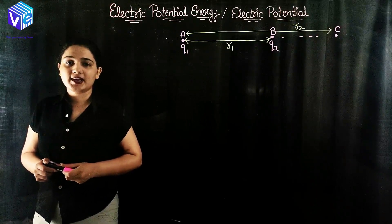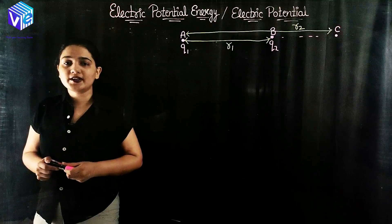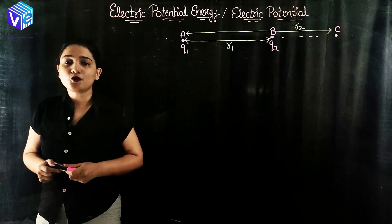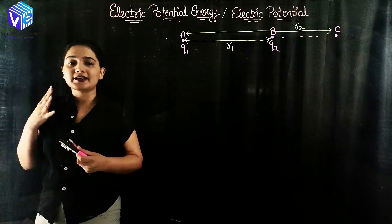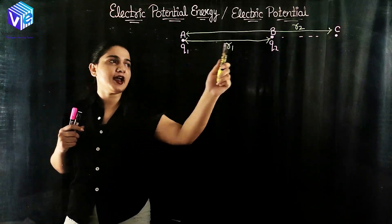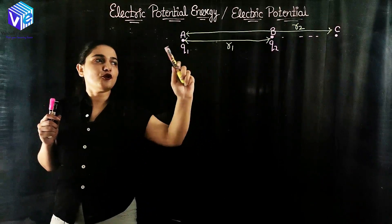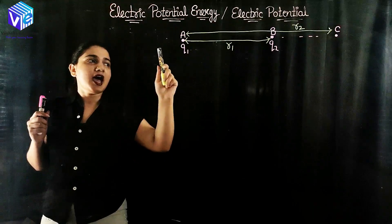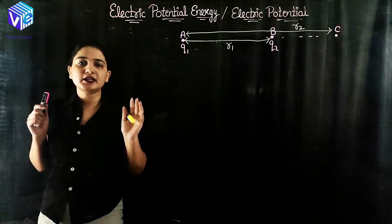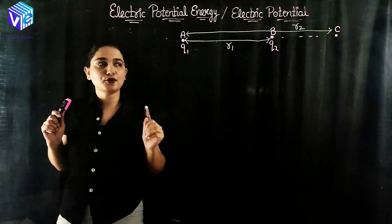So first of all, what is electric potential energy? If we have a system of electric charges, each charge is exerting force upon one another. So if I have to change the position of one of these charges, some external force is required. Let's suppose I have two charges placed at position A and position B — charge Q1 at A and charge Q2 at B. Both are exerting electric force upon each other, and if I am changing the position of Q2 from B to C, we require some external work to be done on Q2, moving it from distance R1 from Q1 to distance R2 from Q1.